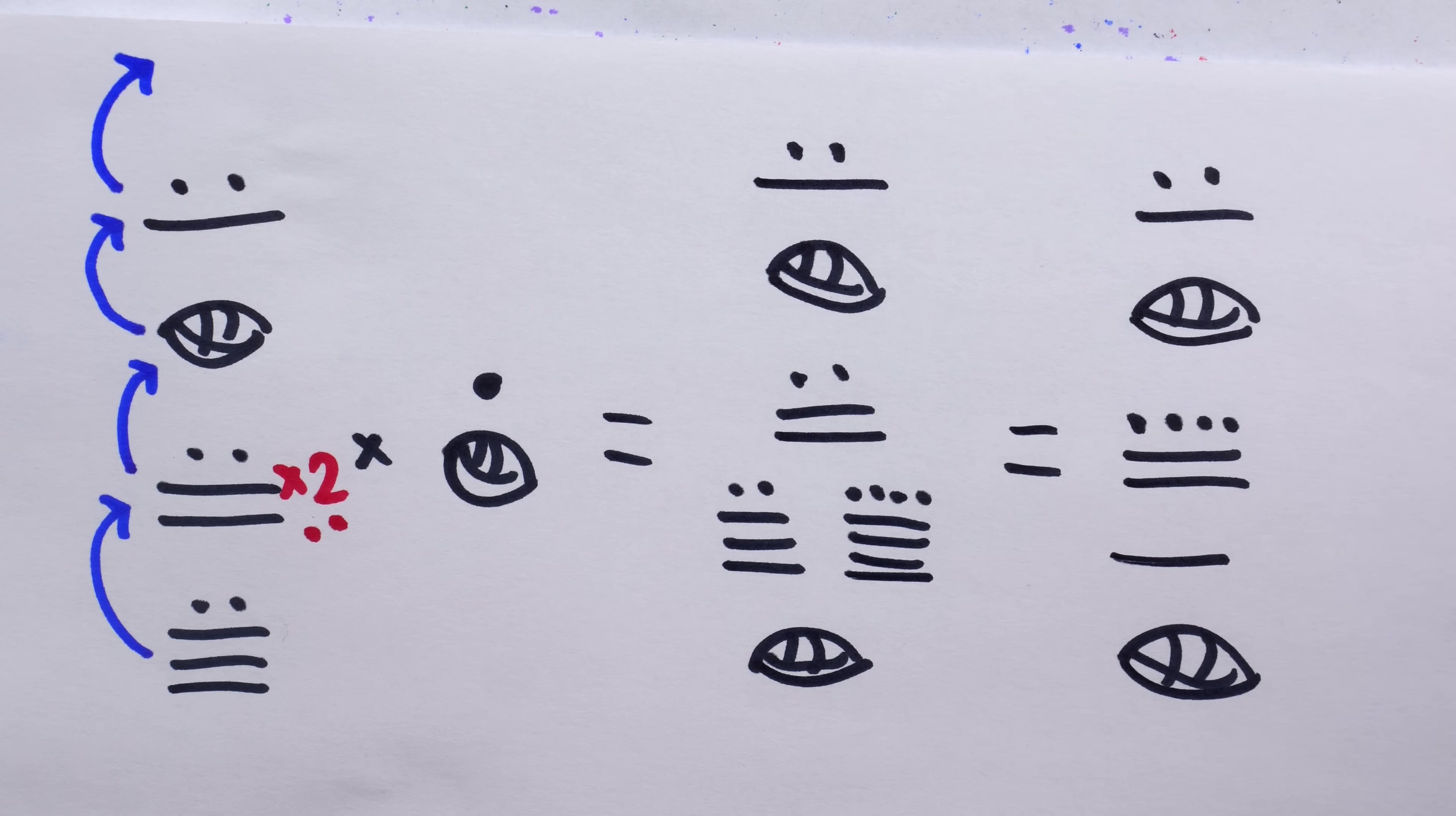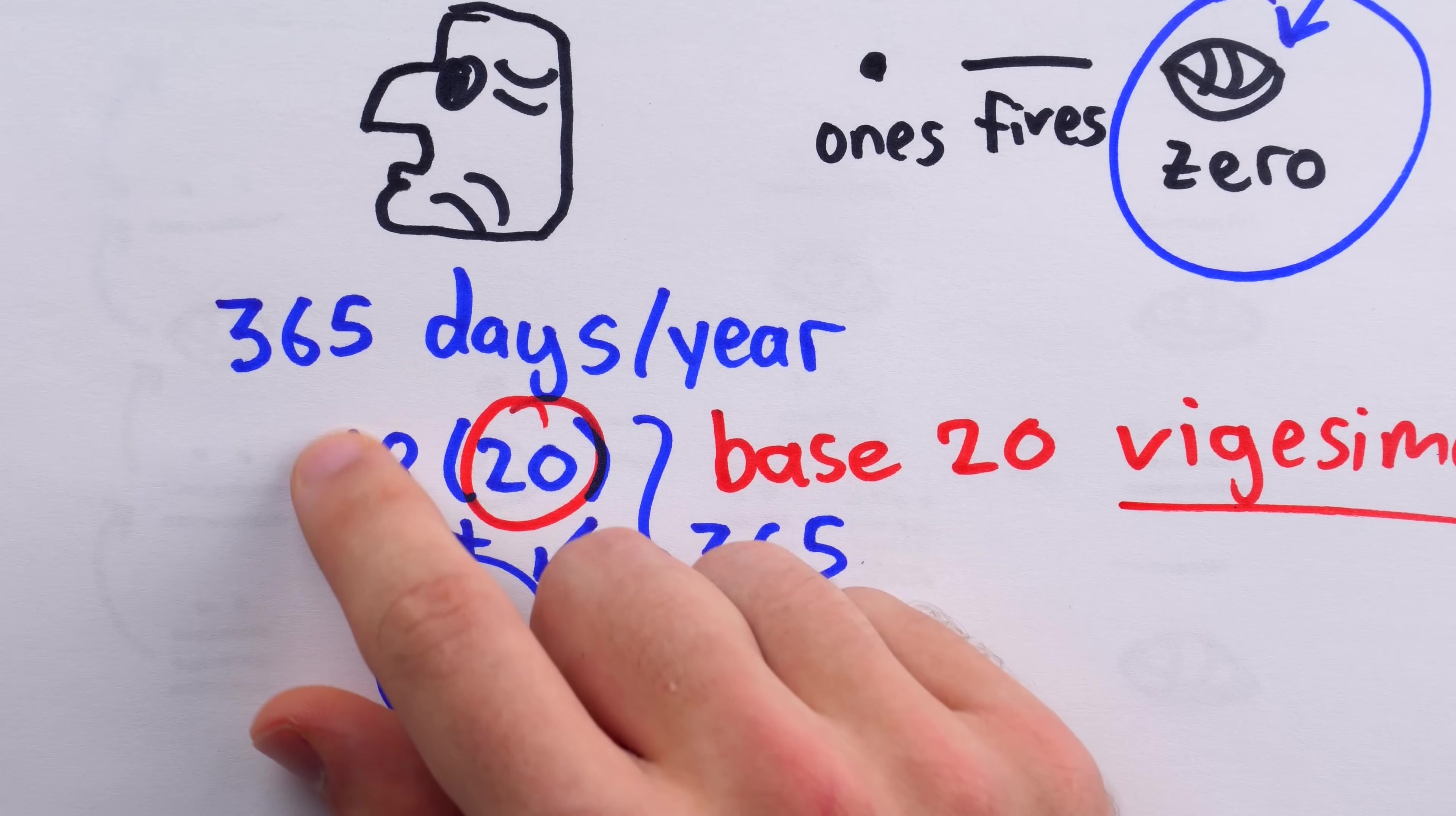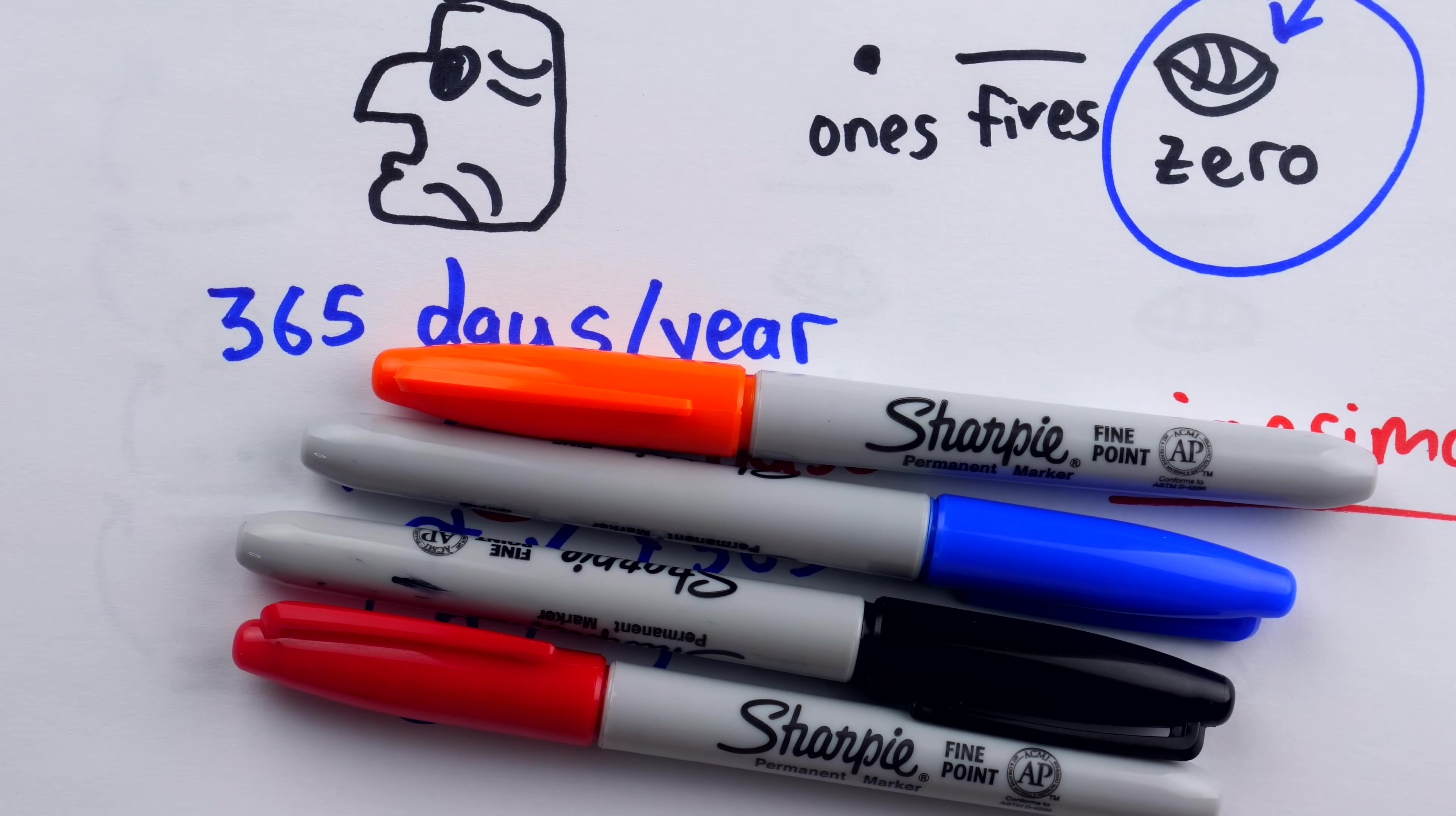So that's how the awkward base 20, not base 20, Mayan number system works. It's mostly base 20 because of the 20 days a month, but it has a touch of base 18 because of the 18 months per year. Let me know in the comments if you have any questions, and be sure to subscribe for more of the swankiest math videos on the internet.